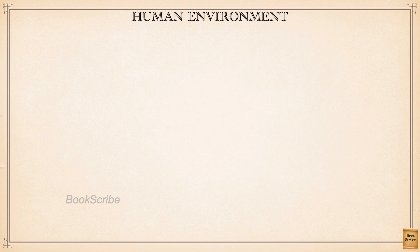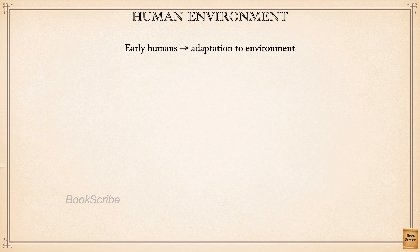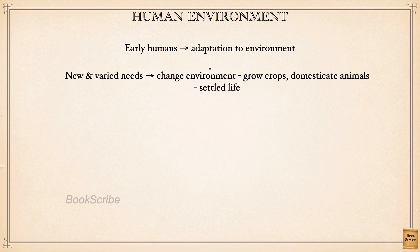In this chapter we learn how human beings interact with the environment. During the early period, early humans adapted to the natural surroundings, leading a simple life in the forest, eating fruits and whatever was available. As time grew, the needs of human beings increased and varied. Humans started using and changing the environment — they introduced farming and domesticated animals, leading to a settled life, and this is how early villages were formed.